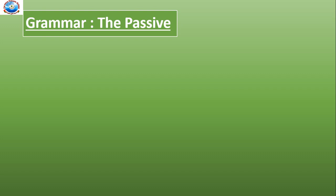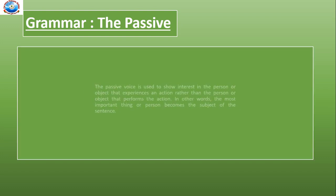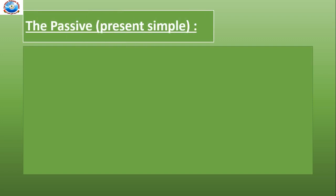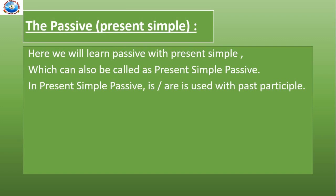Now here we will start with our grammar topic, the passives. The passive voice is used to show interest in the person or object that experiences an action rather than the person or object that performs the action. In other words, the most important thing or person becomes the subject of the sentence. Here we can learn passive with present simple, which can also be called as present simple passive.